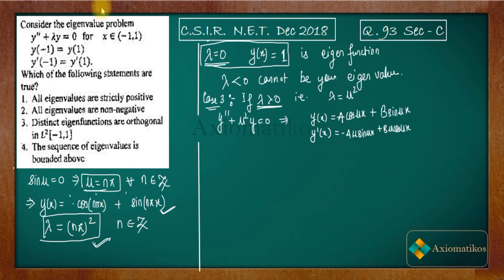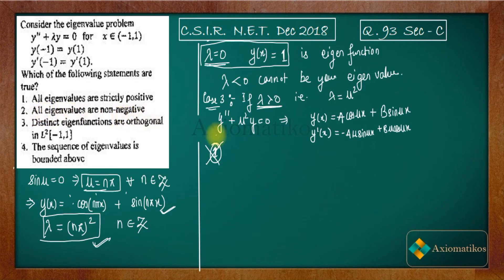Now checking the options. Option 1 states all eigenvalues are strictly positive. However, we found λ = 0 is also an eigenvalue, so 'strictly positive' (meaning non-zero) is false. Option 2 states all eigenvalues are non-negative. Since we have λ = 0 and λ = n²π² > 0, all eigenvalues are indeed non-negative. So Option 2 is true.